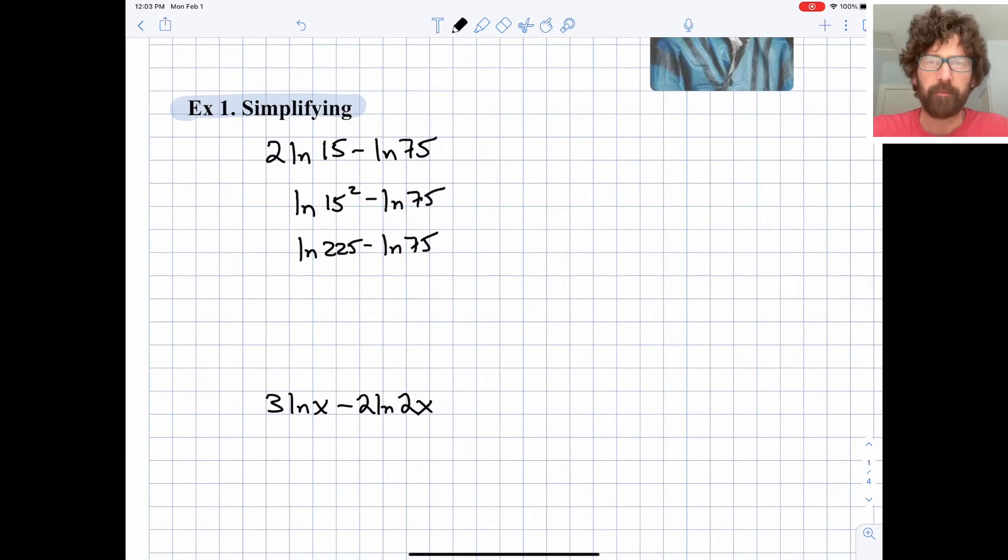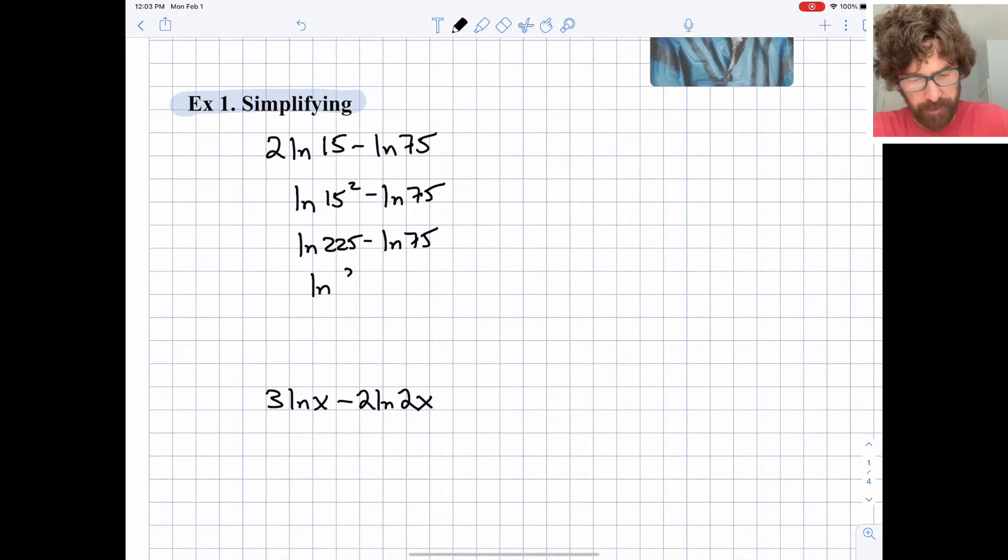And then remember our quotient rule. The difference of two logarithms is the logarithm of the quotient. So we can compact or combine these two logarithms into one. And then simplify that quotient as well. So this turns into the natural logarithm of 3.